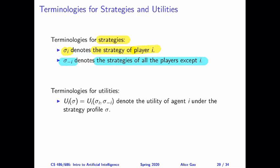Then we need some terminology for representing utilities. All of the players' utilities are determined jointly by all of their strategies. We need a set of strategies for all the players — this is called the strategy profile, and we'll use σ without any subscript to represent the strategy profile; it's a set of strategies, one for each player. We'll use u_i to denote the utility of agent i under the strategy profile, so u_i(σ) is the utility of agent i. We can also break down σ into σ_i and σ₋ᵢ — the strategy of player i plus the strategy of all the other players.